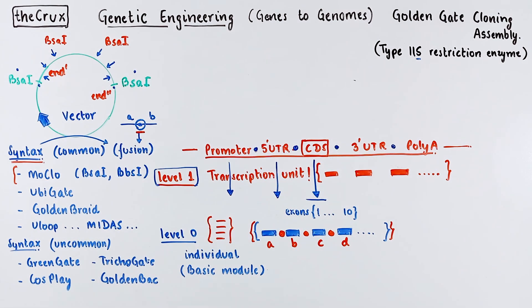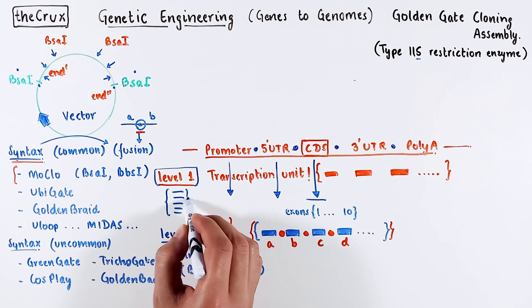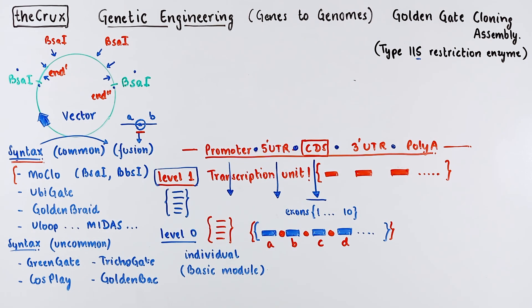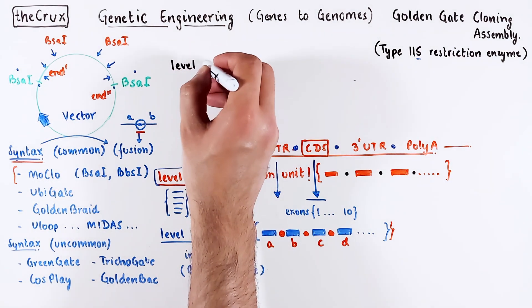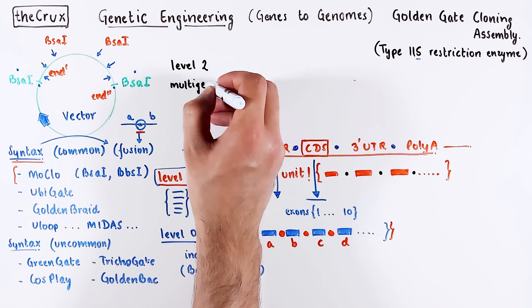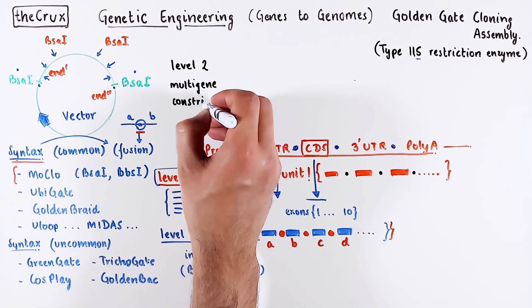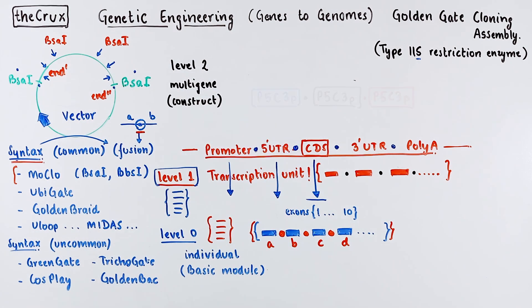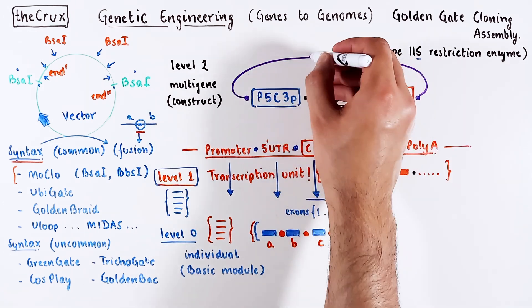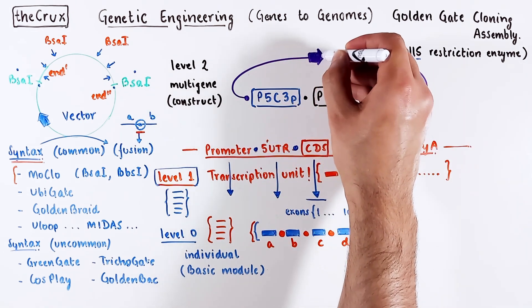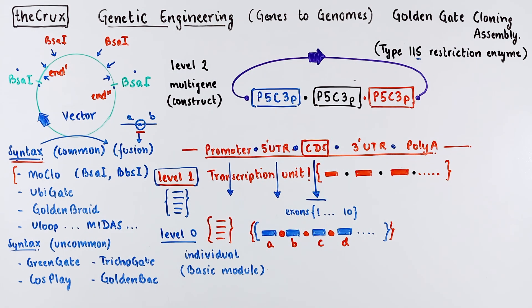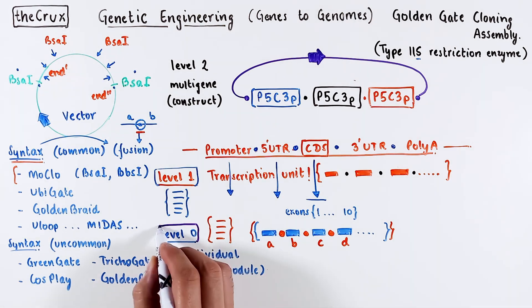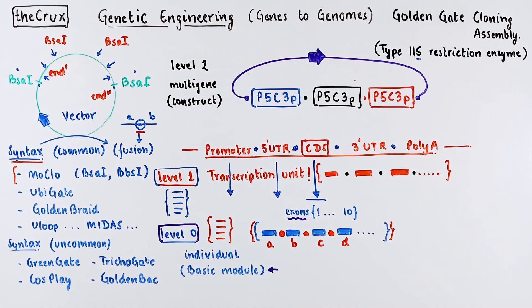This syntax is different from the nucleotides used in fusion points across Level 1 MoClo modules. After Level 1 is Level 2, where you are trying to clone more than one transcription unit into a vector. And there is a syntax or specific nucleotides that are considered appropriate for Level 2 MoClo cloning. This way, the Golden Gate assembly or cloning can be used to go from Level 0 structure to more complex Level 2 structures, all done in one single ligation reaction.